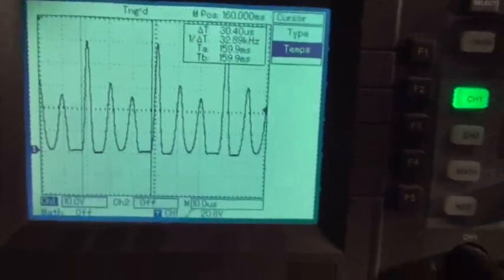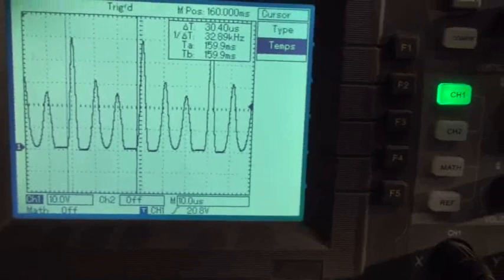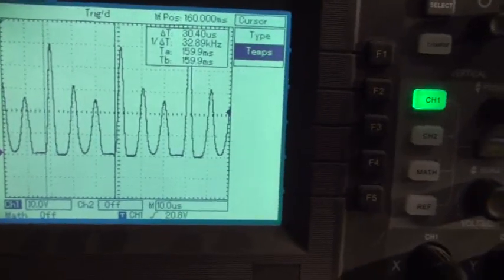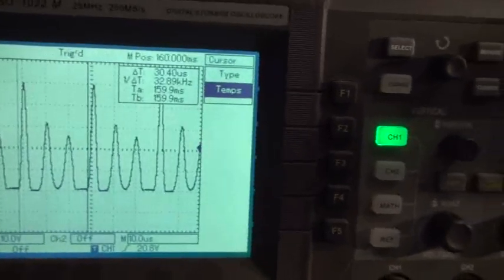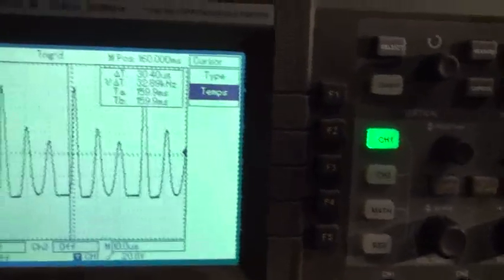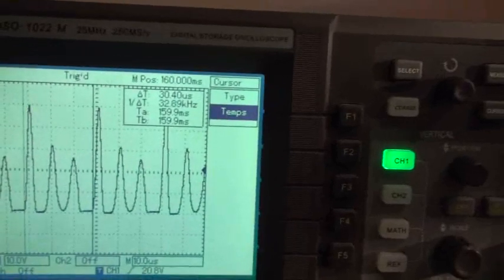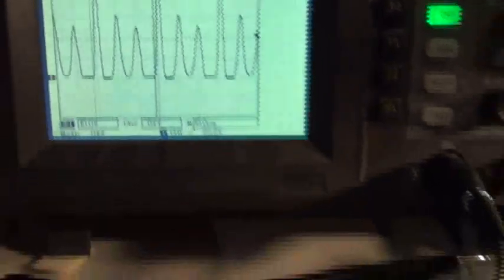We are now on 10 volt division. It goes 1, 2, 3, 4, 5, almost 50 volts repeating at 32 kilohertz as you can see.